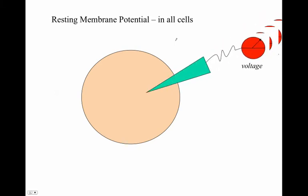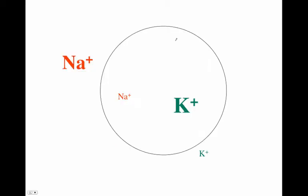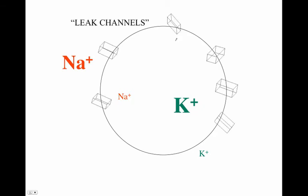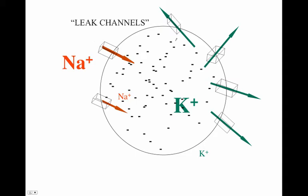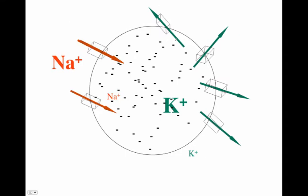That brings us to the resting membrane potential discussion. We're going to be taking a look at voltage and how we have a resting membrane potential of negative 70 millivolts within the cell. This is due in large part to other elements within the cell that are influenced by sodium and potassium, and how their flow functions to make all of this happen.